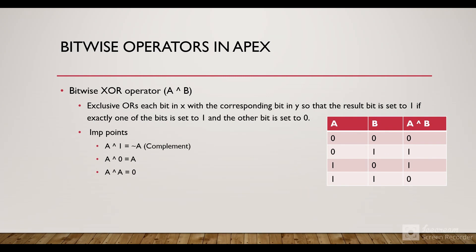This is a little complicated one — the bitwise XOR. The bitwise XOR exclusive-ORs each bit in X with the corresponding bit in Y so that the result bit is set to 1 if exactly one of the bits is set to 1 and the other is set to 0. In an easy way: if two numbers are the same, the result would be 0. If the numbers are different, the result would be 1, as we can see in this table.